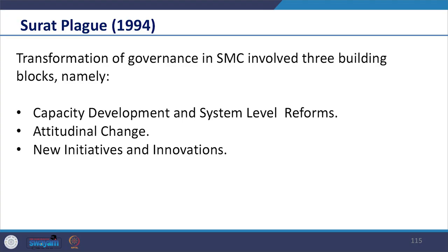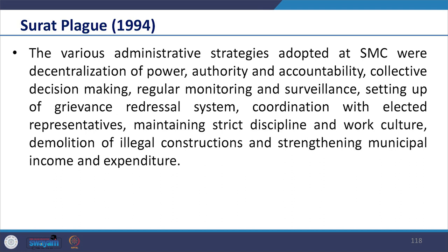The transformation of governance in SMC involved three building blocks: capacity development and system-level reforms, attitudinal change, and new initiatives and innovations. Capacity development — meaning training people along with an enabling environment — created a supporting environment that played a mutually reinforcing role in institutional reform. The various administrative strategies adopted were decentralization of power, authority and accountability, collective decision-making, regular monitoring and surveillance, setting up of a grievance redressal system, coordination with elected representatives, maintaining strict discipline and work culture, demolition of illegal constructions, and strengthening municipal income and expenditure.